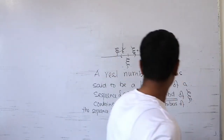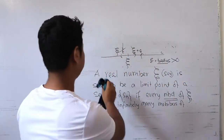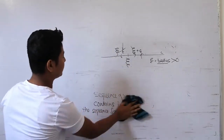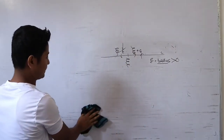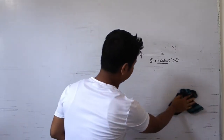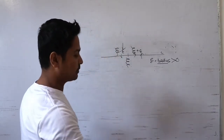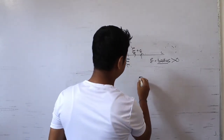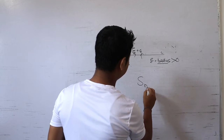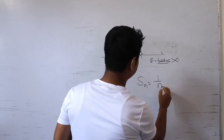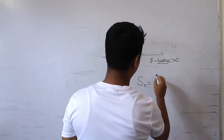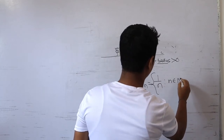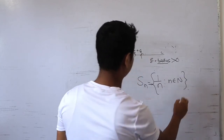Let's take a common example from real analysis. Consider the sequence Sn = 1/n, where n belongs to the natural numbers.